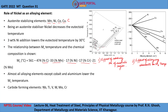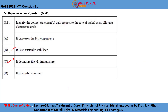The most common carbide forming elements are niobium, titanium, vanadium, tungsten, molybdenum, and chromium. Nickel is not a carbide forming element and is most commonly found in the austenite phase. So option D is also not correct. Therefore, the correct answers are option B and option C.